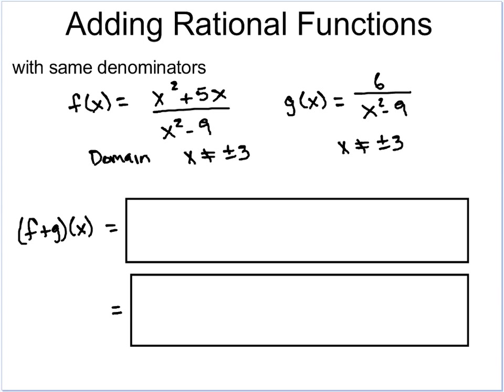We're going to look at the same denominators first, just to get the concept down. In this problem, I have two functions: f(x) = (x² + 5x) / (x² - 9), and g(x) = 6 / (x² - 9). Notice the denominators are the same — they're both x² - 9. Therefore, the domain is the same: x cannot equal positive or negative 3.